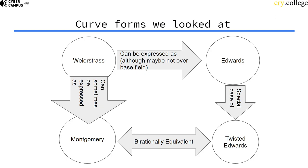Montgomery curves can always be rewritten into twisted Edwards curves, and twisted Edwards curves can always be rewritten into Montgomery curves. And Montgomery curves are a special case of Weierstrass curves. Not all Weierstrass curves can be rewritten as Montgomery curves, but all Montgomery curves, all twisted Edwards curves, all Edwards curves — all these curves can be rewritten to Weierstrass curves, because Weierstrass curves are the most general form.